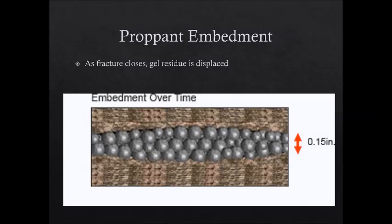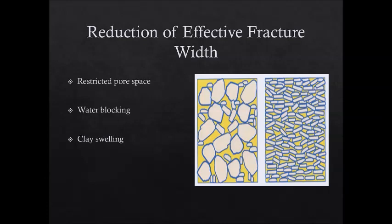As the fracture is closing, proppants are embedded into the filter cake. This process causes gel residue to become deformed and displaced towards the middle of the proppant package. The deformation and dispersion of the gel residue seriously deteriorates the proppant permeability, in turn decreasing conductivity. Conductivity is also decreased when there is a decrease in the effective fracture width, due to non-Darcy flow in the restricted pore space, water blocking, and the swelling of clay.